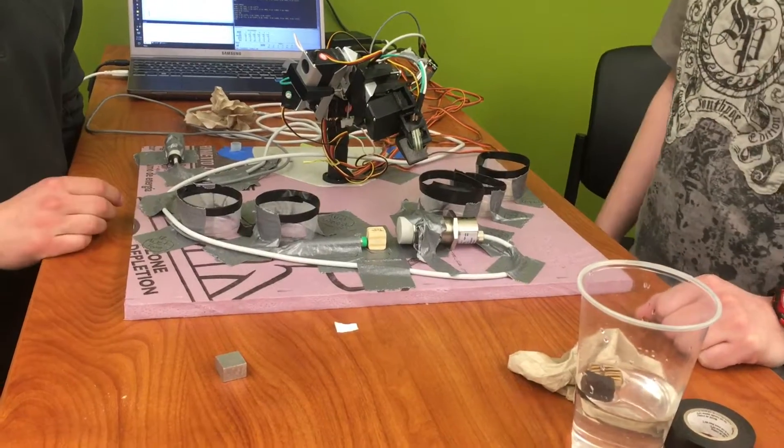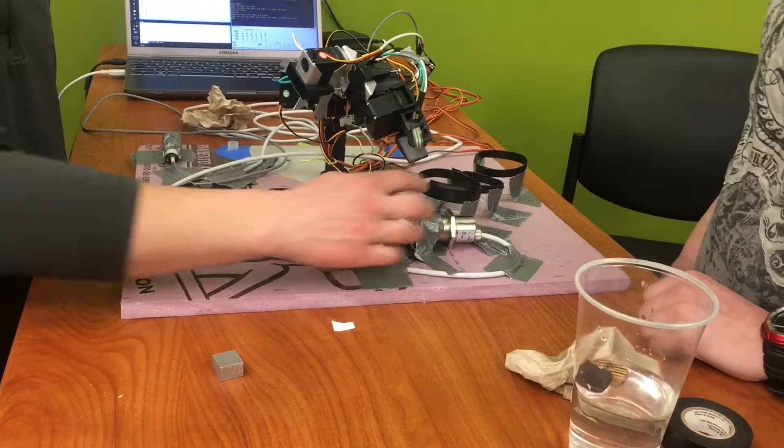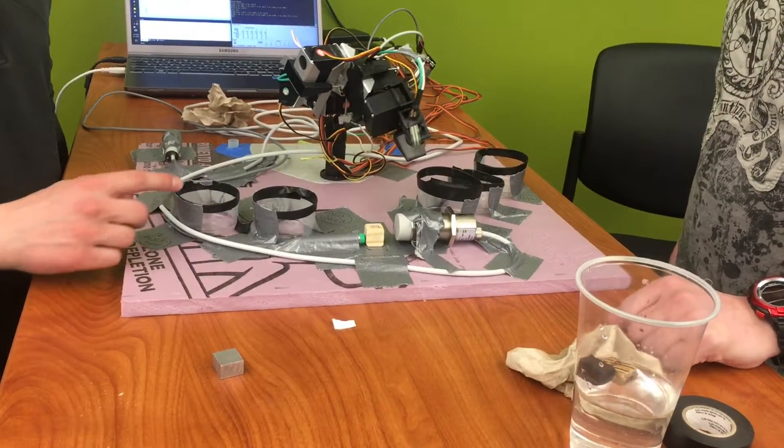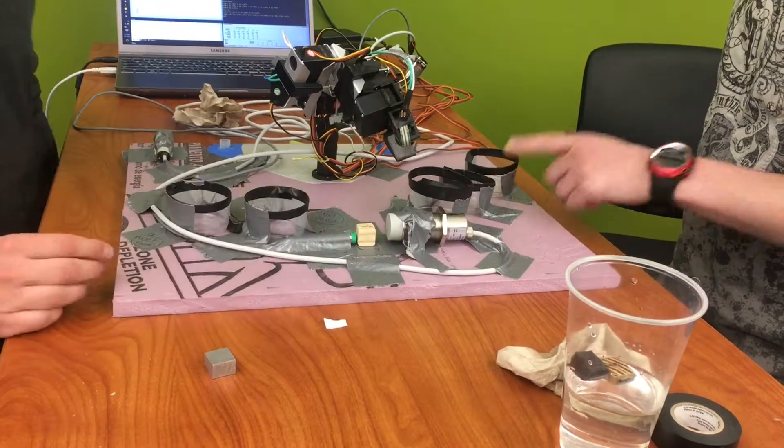So we're going to show you what we got. Point out the cups too. Here are the cups that we're going to put the five different materials in. We got wet foam, wet wood, dry wood, dry foam, and metal.